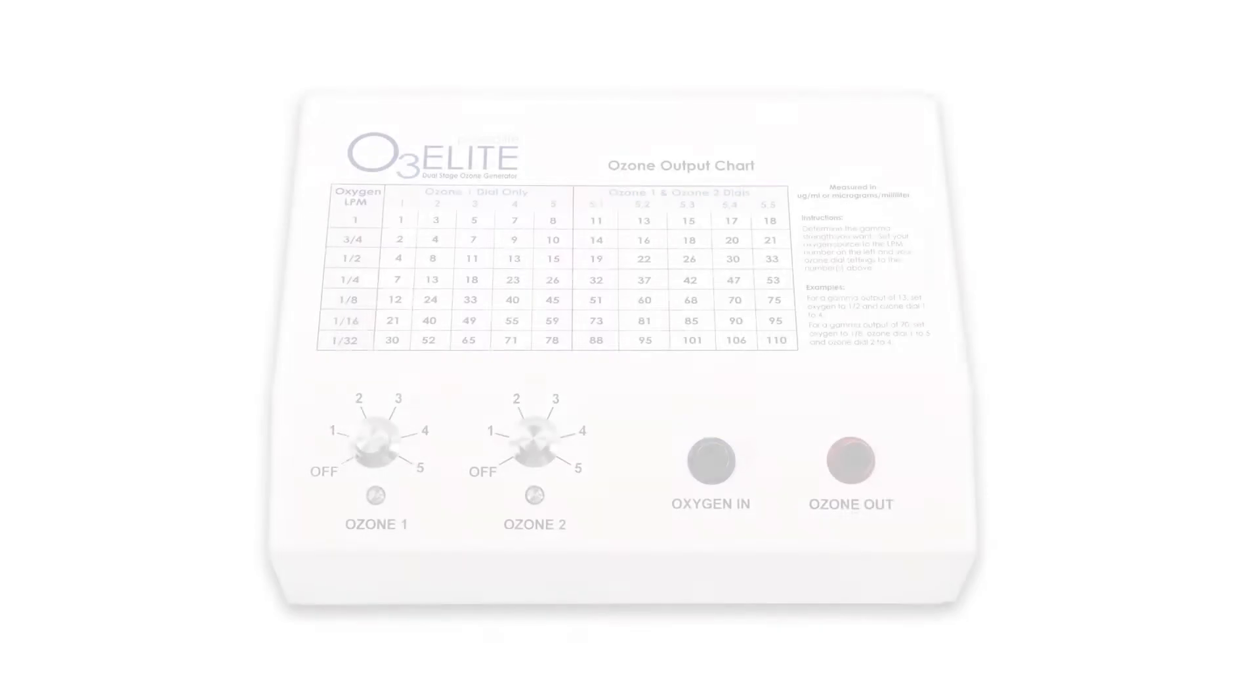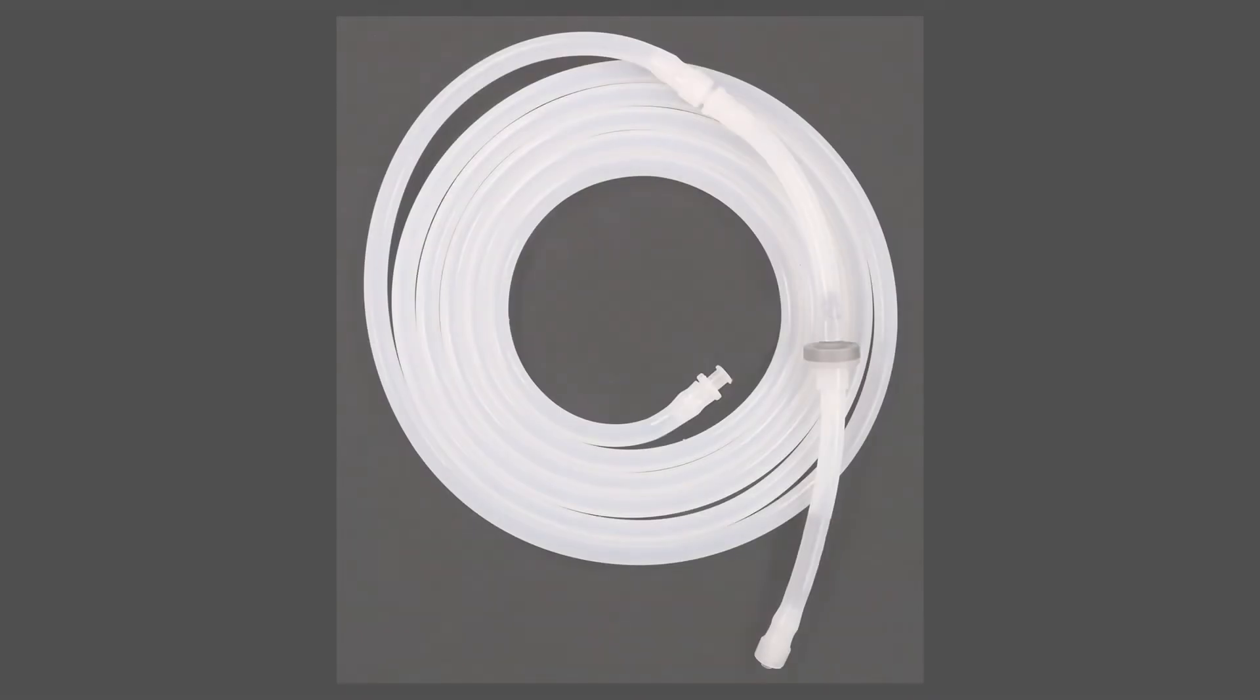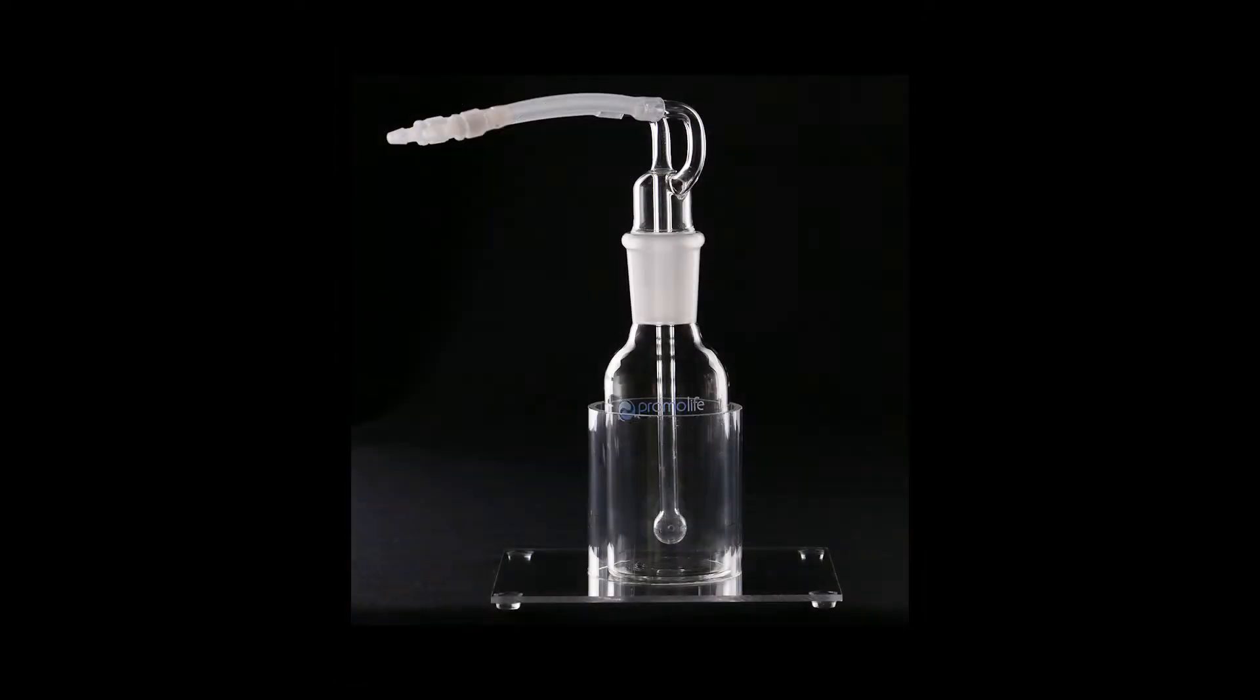These include an O3 Elite Dual Ozone Generator, tubing with a check valve attached to 5 feet of silicone tubing, an oil bubbler, and a nasal cannula.